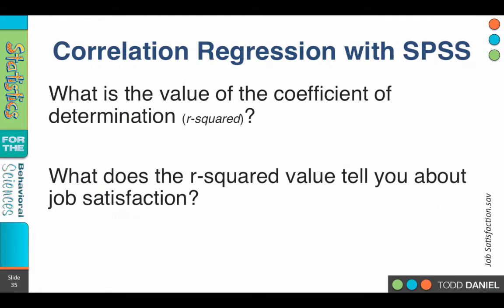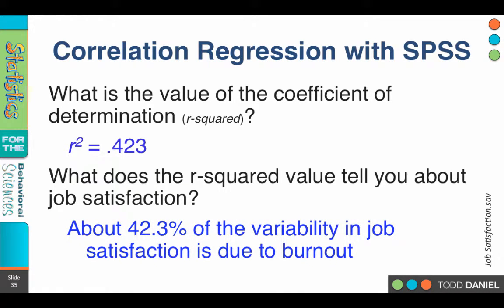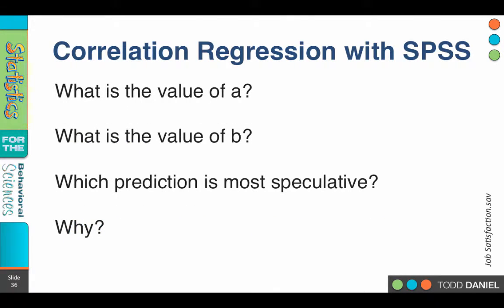Now, what is the coefficient of determination? What is our R squared value? That comes from a box that is labeled R squared. It is an R squared of .423. And what does this tell you about job satisfaction? It tells you that 42.3% of the variability in job satisfaction is due to burnout. When we created our regression equation, what do we calculate as the value of A? 235.46. How about the value for B? Negative 2.11.